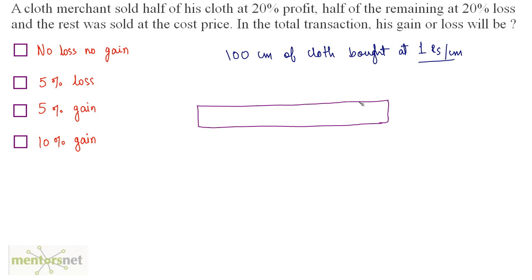The cloth merchant sold half of his cloth — the left half — so the cost price of the first half is 50. He then divides half of the remaining into half again: cost price of that portion is 25, and the remaining portion is also 25.